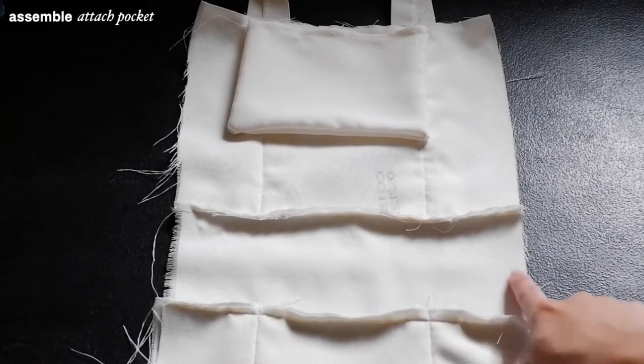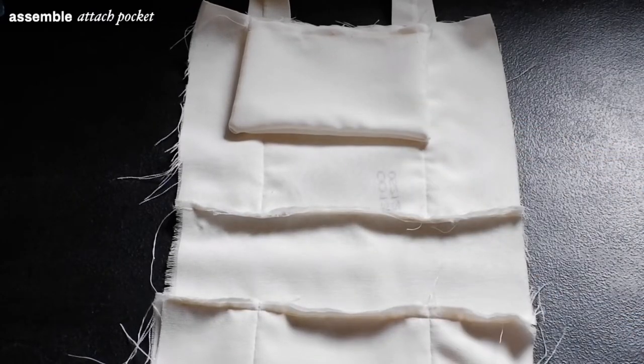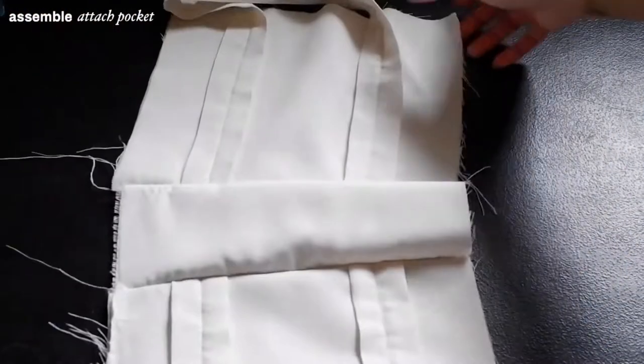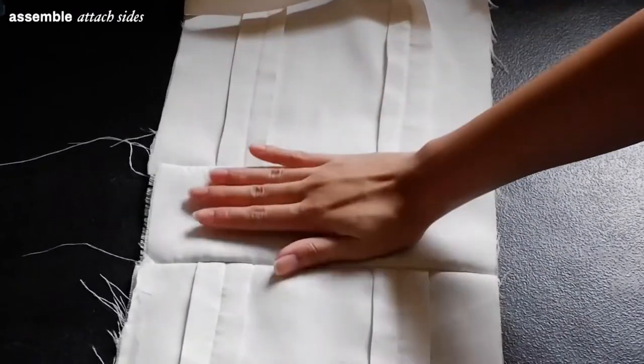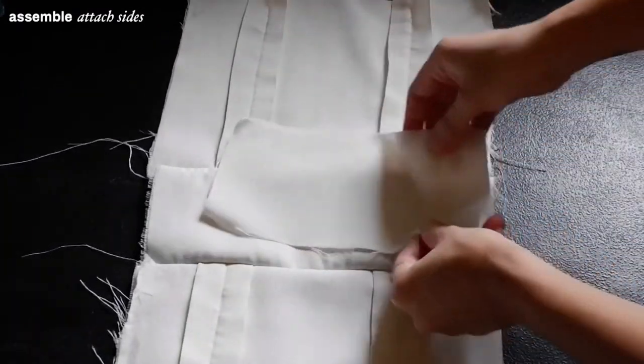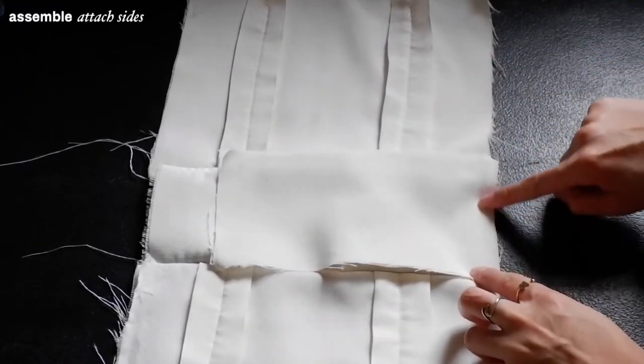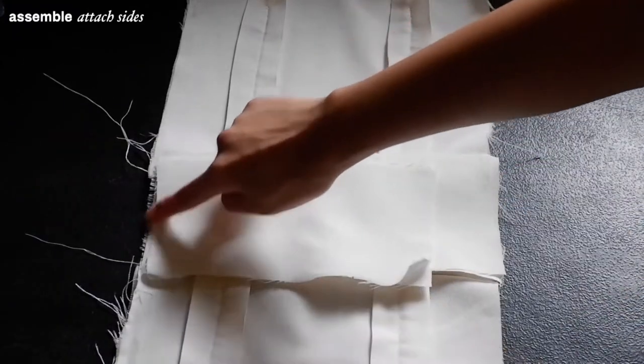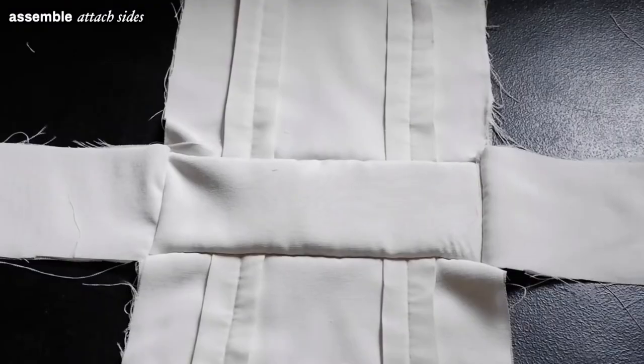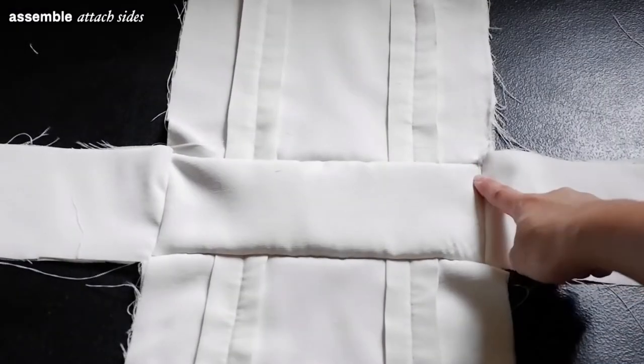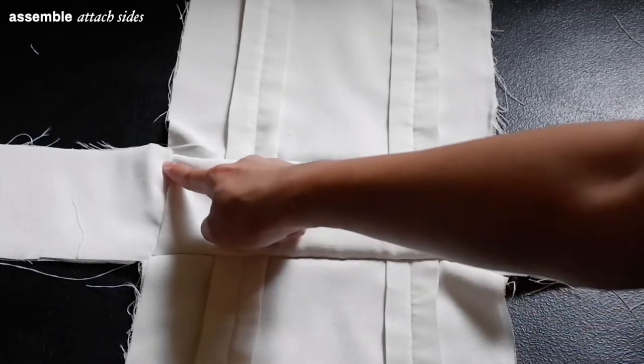Now this is how the project looks like after attaching the pocket. At this point, it is time to attach the sides or pattern number three to the base of the bag. Again, all the right sides are facing each other. This is how the project would look like after attaching the sides to the base.